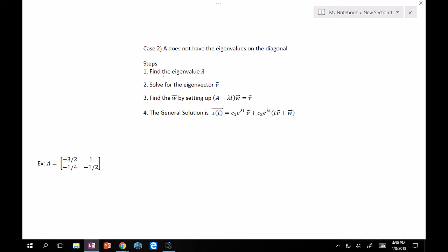By setting up A minus lambda I times W will give you V, which is your original eigenvector. And therefore, your general solution is given as X of T is equal to C1 E lambda T times V plus C2 E lambda T times T V plus W. Now, notice this is T V.